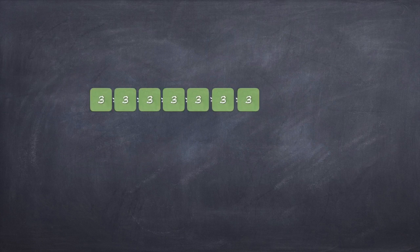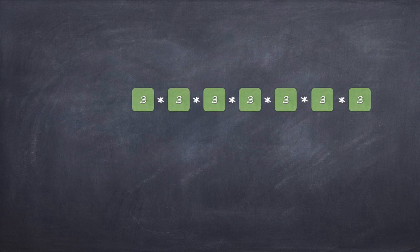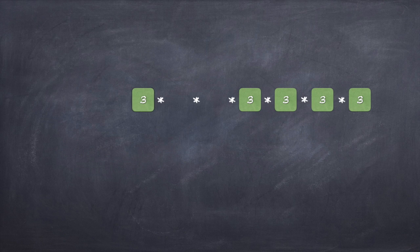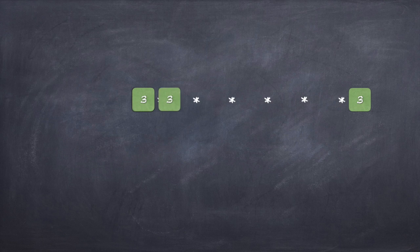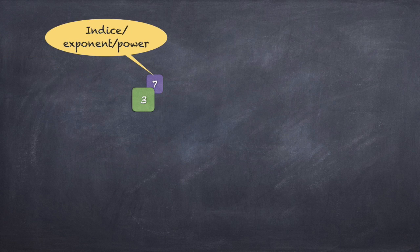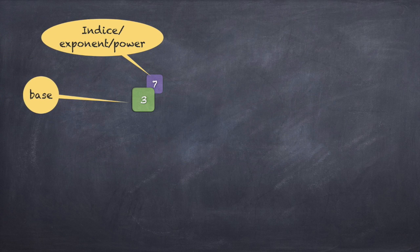Let's look at more examples. Say you have 3 x 3 x 3 x 3 x 3 x 3 x 3 — that is 3 multiplied by itself 7 times. How do we write this in index form? 3 is our base and it is repeating 7 times, so I put all the 3's together and take the count of 7 and put it on top. So 3 is the base and 7 is the exponent, the index, the power. I hope you are getting the idea.